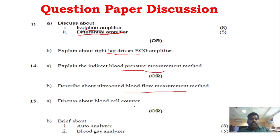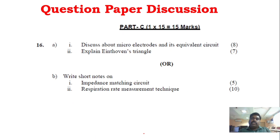In Unit 5: blood cell counter, auto analyzer, and blood gas analyzer. You will see direct questions. In Part C: the equivalent circuit and ECG are key topics to focus on.